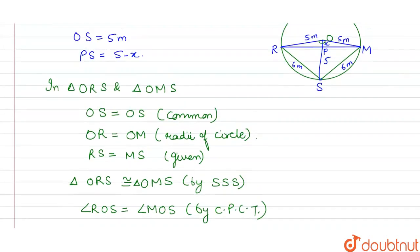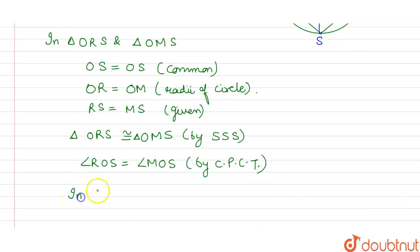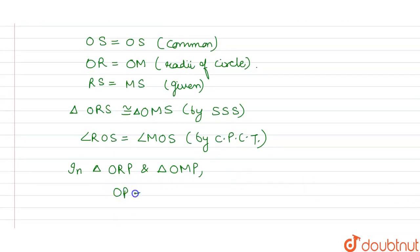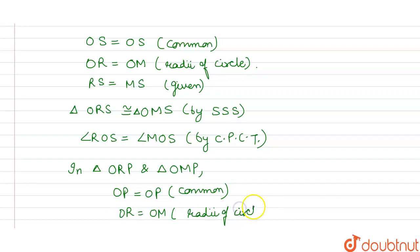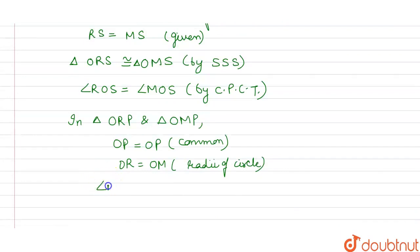अब हम prove करते हैं triangle ORP और OMP को congruent। Triangle ORP and triangle OMP में: OP common है — OP equals OP common। OR equals OM — radii of circle हैं। और अभी हमने proof किया कि ये दोनों angles भी equal हैं — angle ROP equals angle MOP। तो triangle ORP congruent to triangle OMP by SAS। Proved।